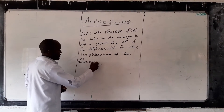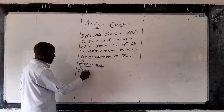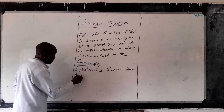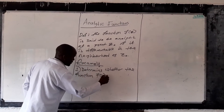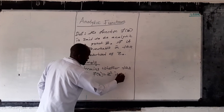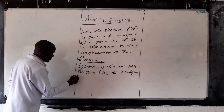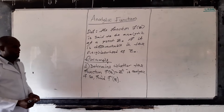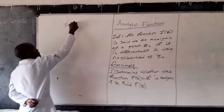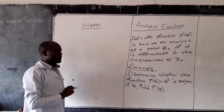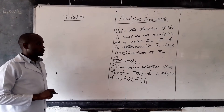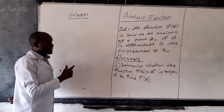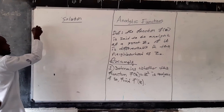Example, question number one: determine whether the function f of z equals z squared is analytic. If so, find the derivative of z. For us to determine whether the function is analytic or not, we have to check whether that function satisfies the Cauchy-Riemann equations.